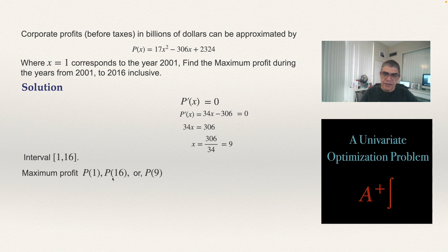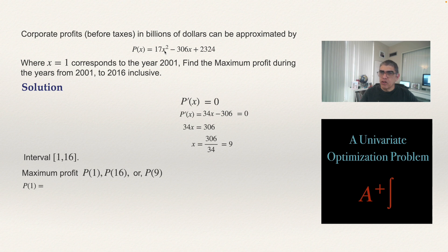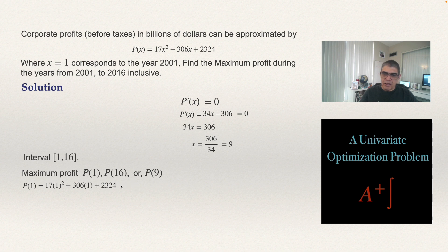First, we compute P(1) — the profit in 2001. Substituting x = 1 into the original equation: 17(1²) - 306(1) + 2324 = 17 - 306 + 2324 = 2035. So P(1) = 2035 billion dollars.